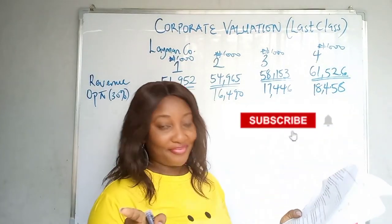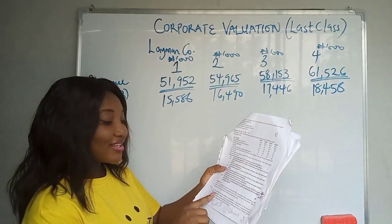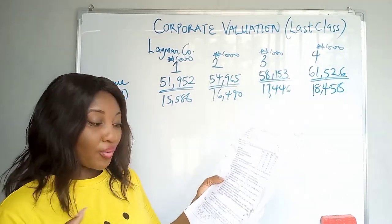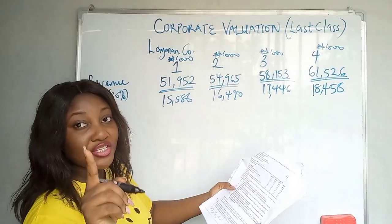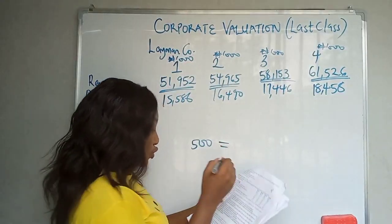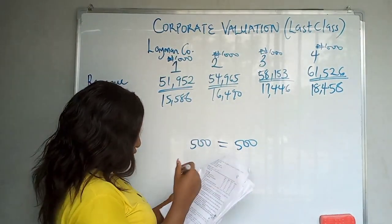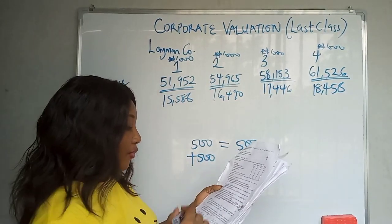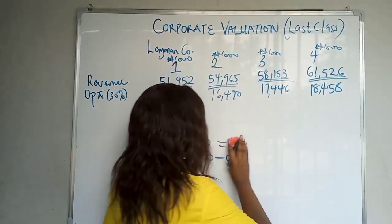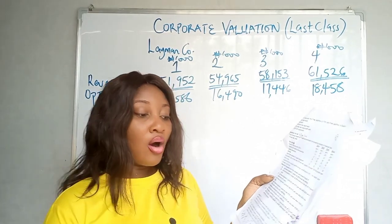The question states tax allowable depreciation is equivalent to the amount of investment required to maintain current operational levels. This means you ignore both — the tax allowable depreciation acts as a plus and the working capital maintenance as a minus, so they cancel each other out. You can simply ignore both of those items.